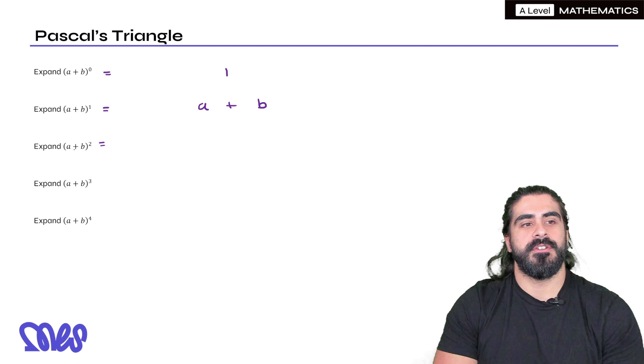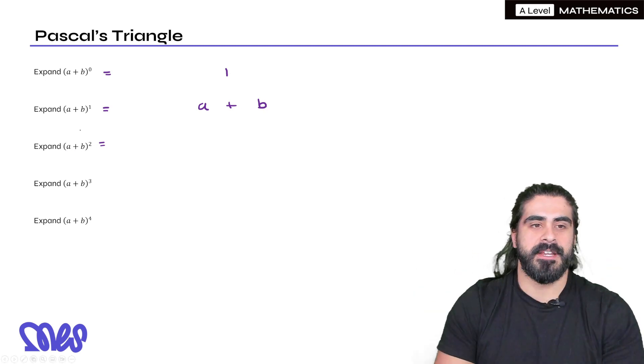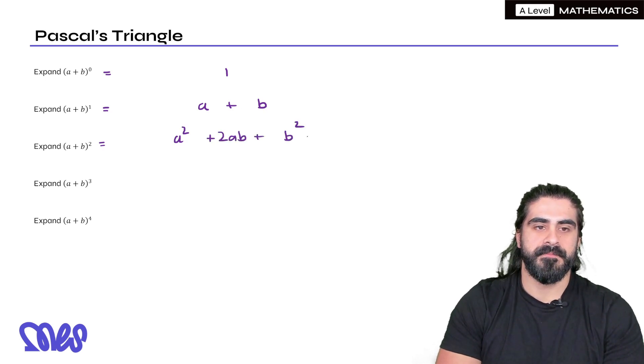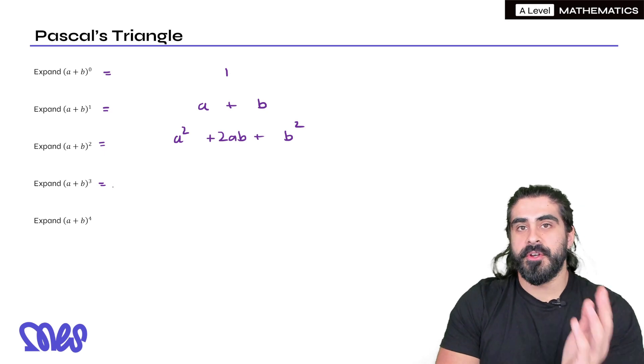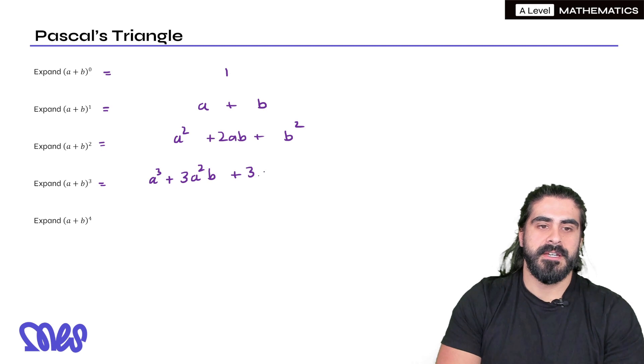Now without doing the full expansion, (a + b) squared - instead of writing two brackets out we're going to get a² + 2ab + b². To the power of cubed - again I'm not going to write three brackets but it would look like this: a³ + 3a²b + 3ab² + b³.